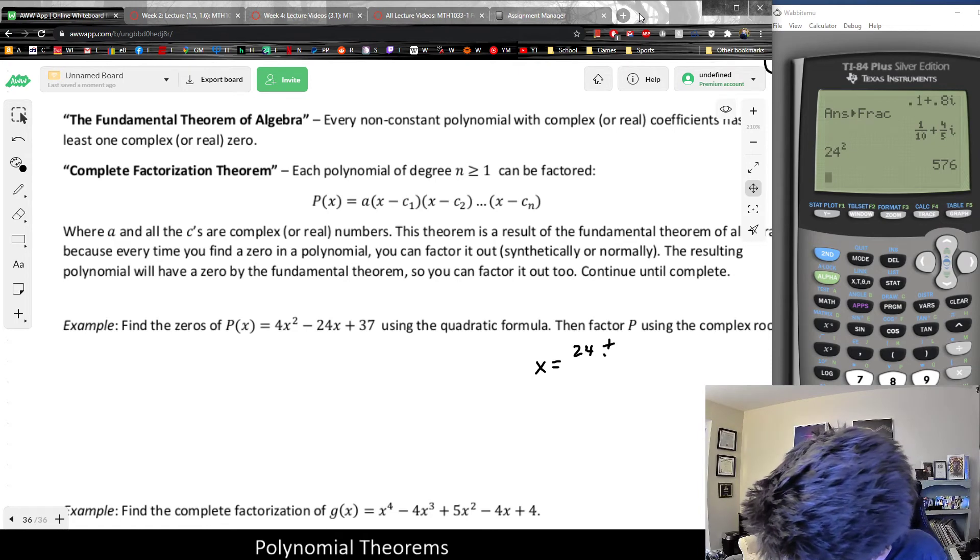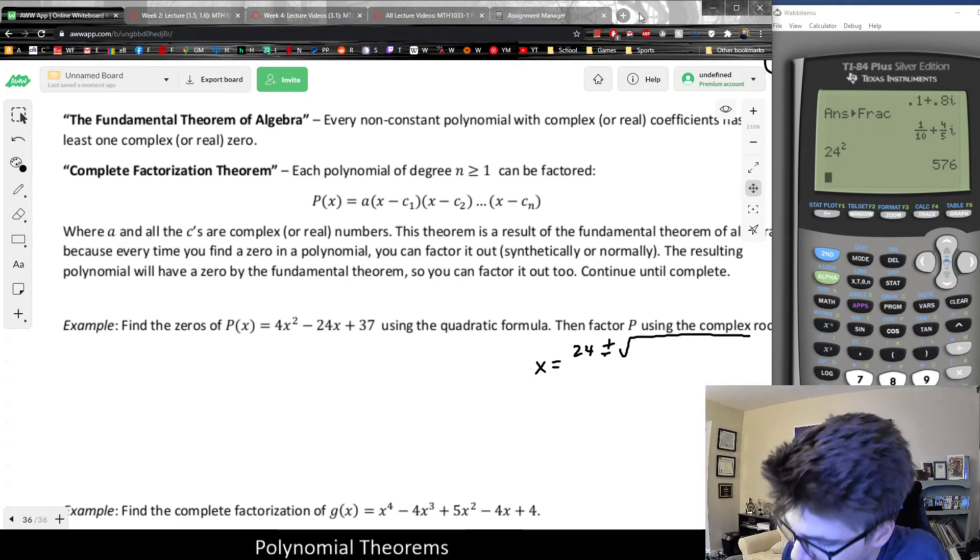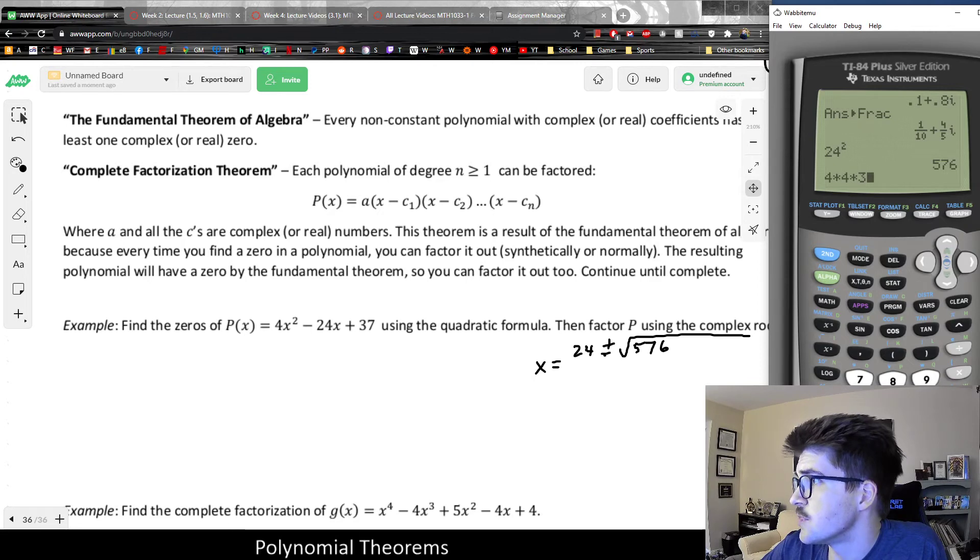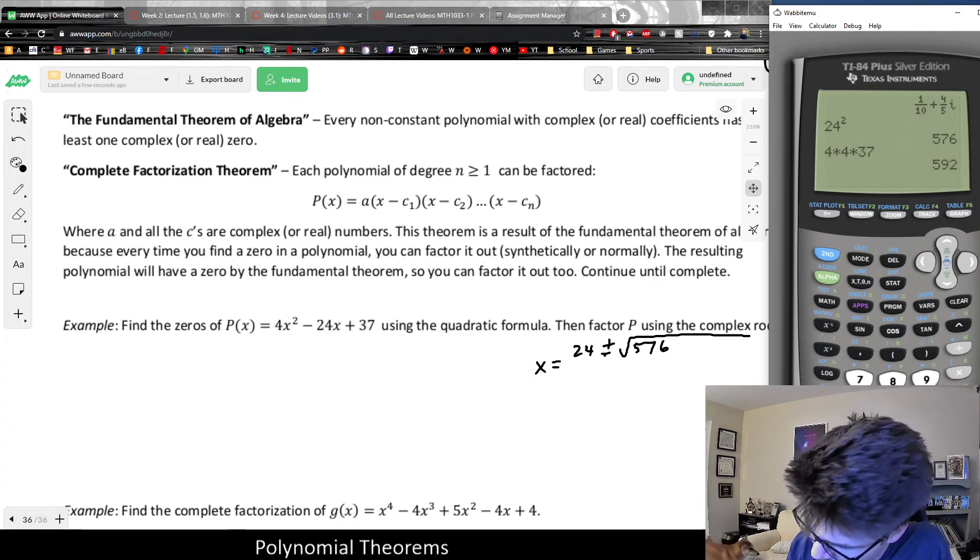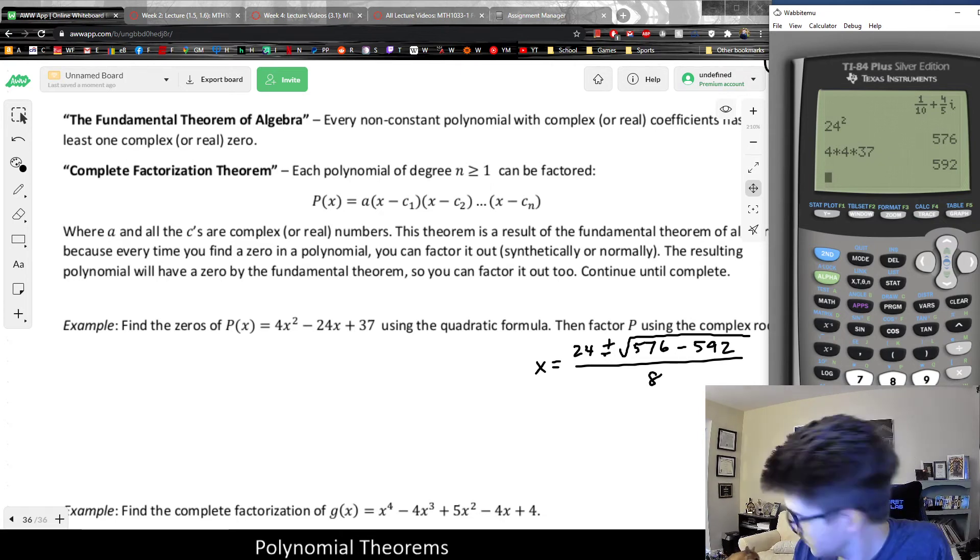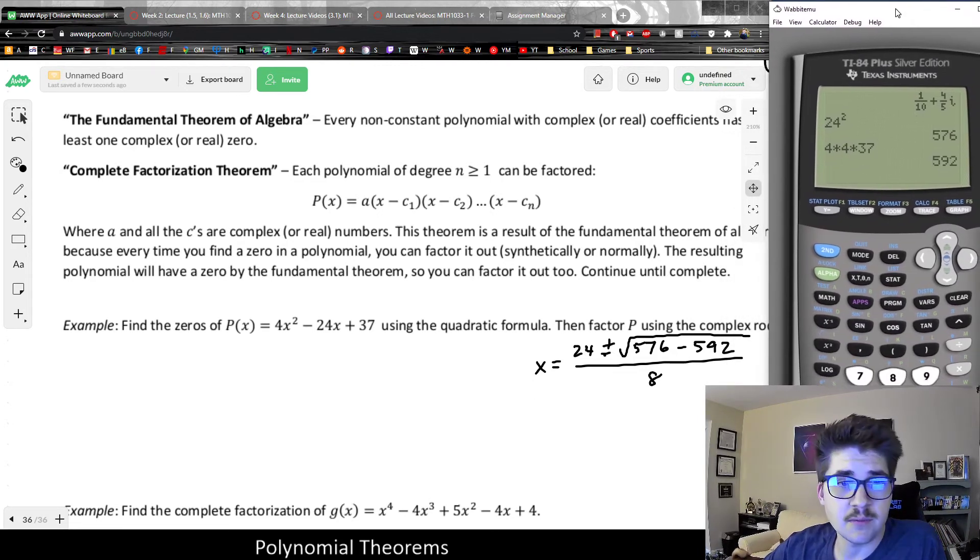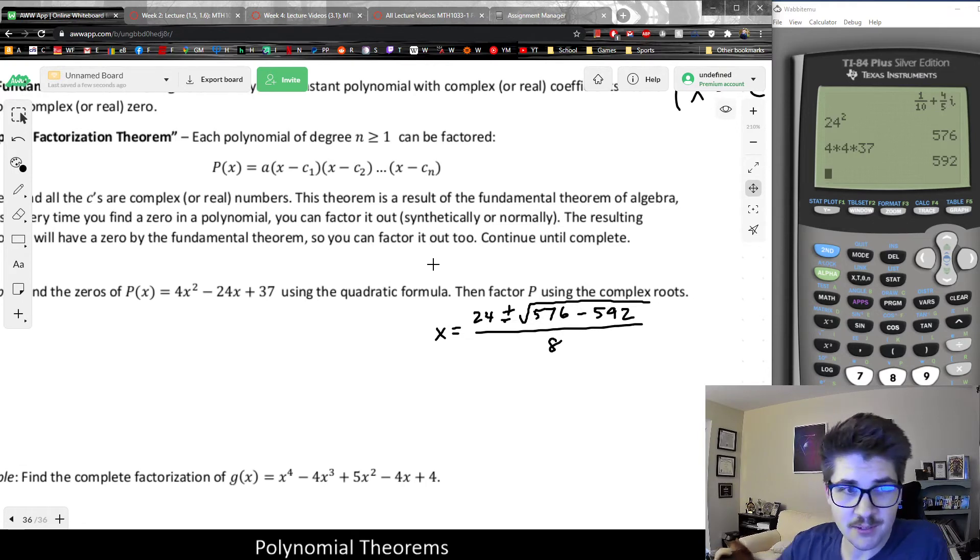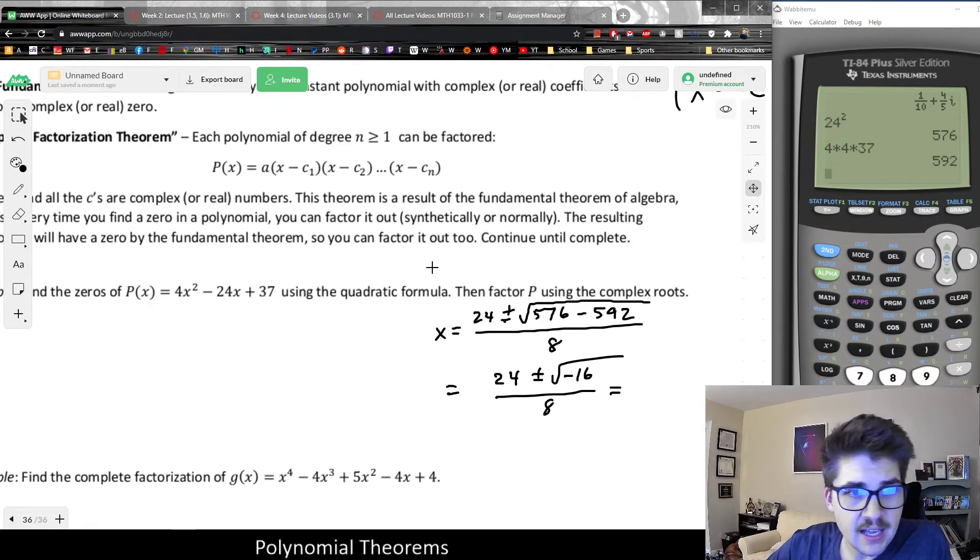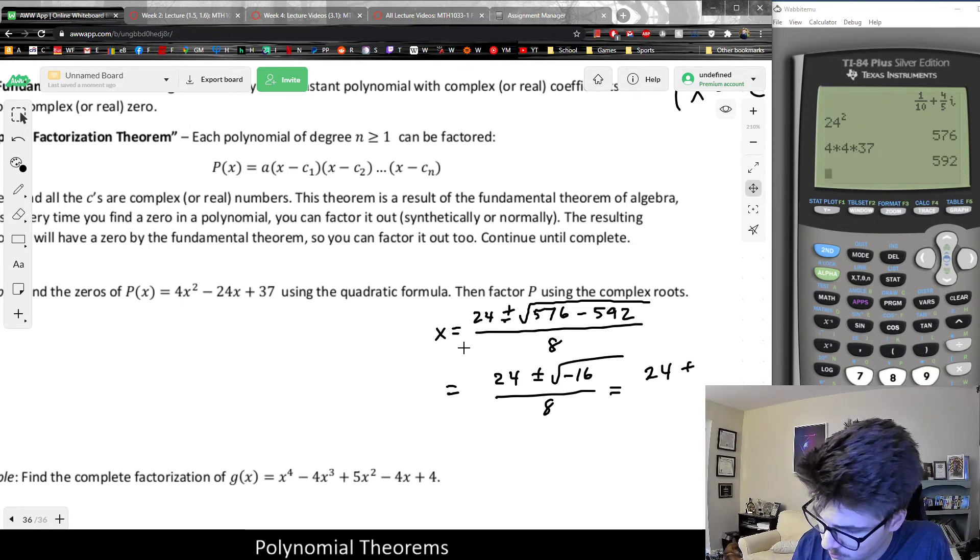Because the quadratic formula can help me find the zeros of any quadratic. And it's a very important tool for understanding the roots of polynomials. But starting with the quadratic formula, I would have the solutions to this quadratic equation set to zero. So it would be negative b plus or minus b squared. I don't remember 24 squared off the top of my head. It is 576. Let me redo this. 24 plus or minus the square root of b squared, 576, minus 4ac. So minus 4 times 4 times 37 would give me 592. And all of that would be divided by 2a, which is 8.